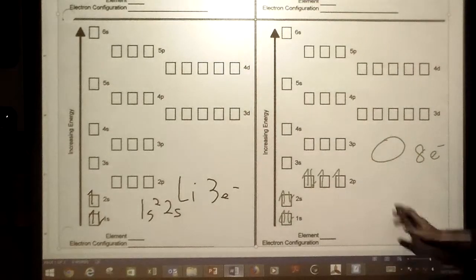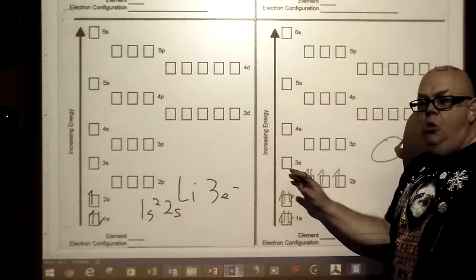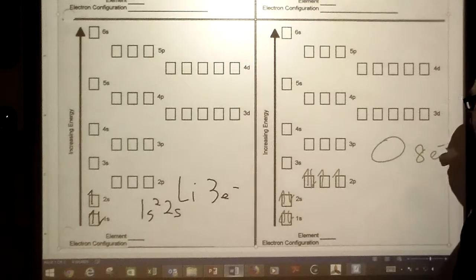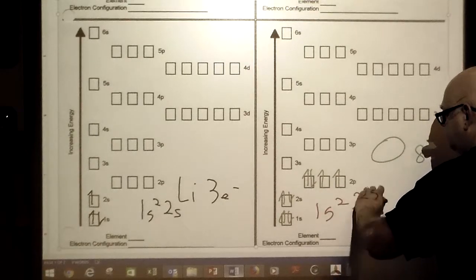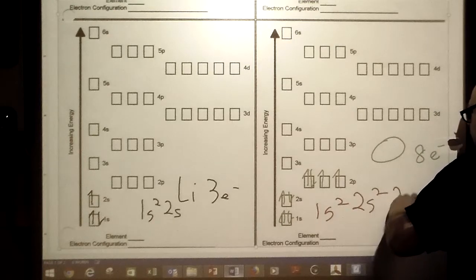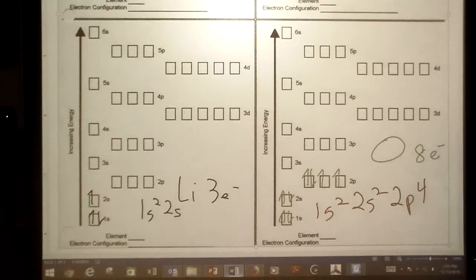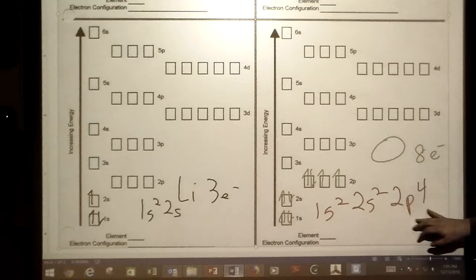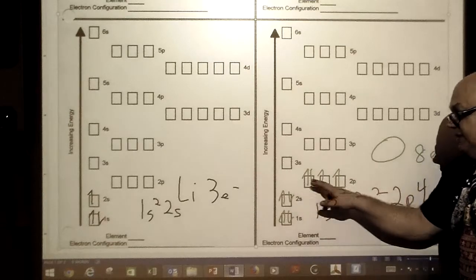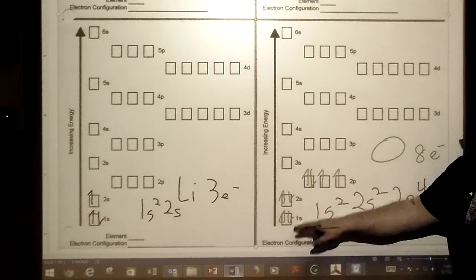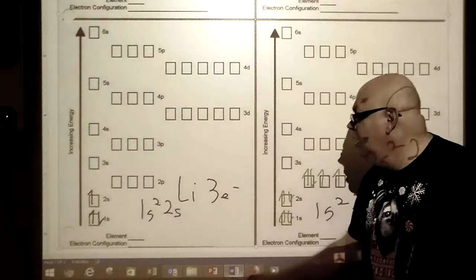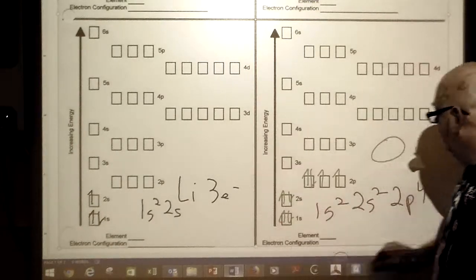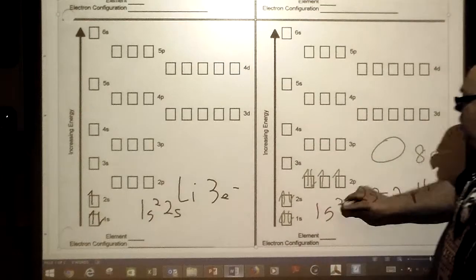What about the electron configuration? It'll be 1s² 2s² and 2p⁴. That's the electron configuration, it's telling the same thing as what you're seeing here except it's a lot shorter.